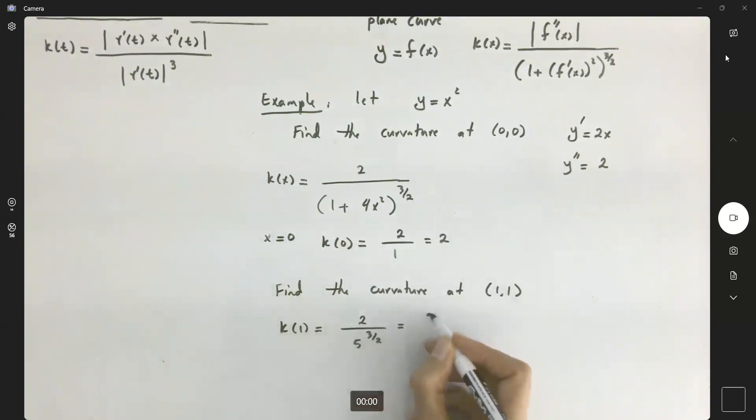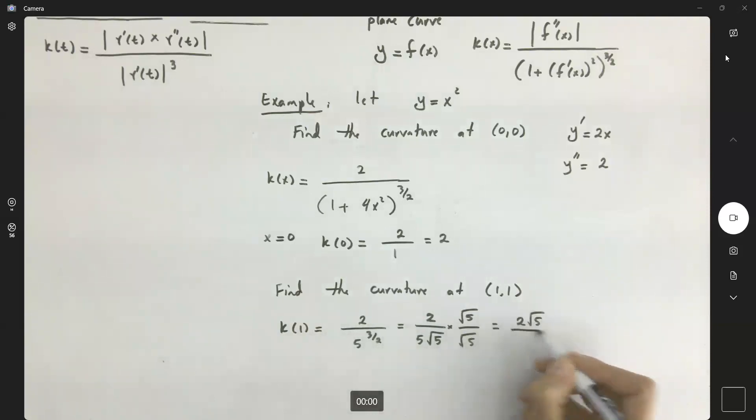So if you change this to 3 halves or 2 divided by 5 times square root of 5, you can just rationalize this and then you have 2 square root of 5 divided by 25 or you can leave it as 2 divided by 5 square root of 5.